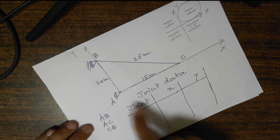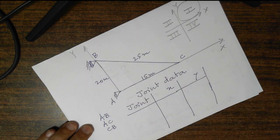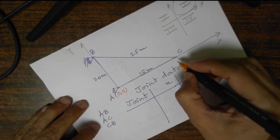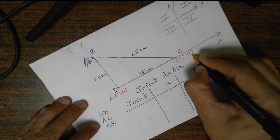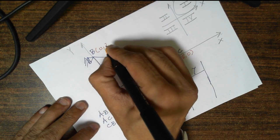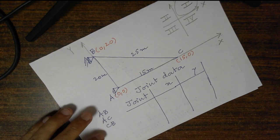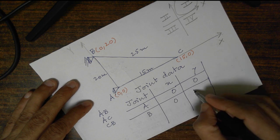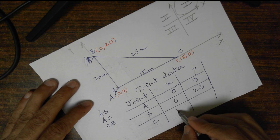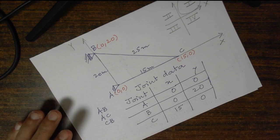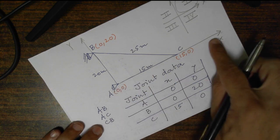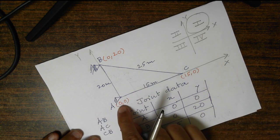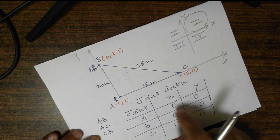I have selected joint A as the origin. So joint A has coordinates (0, 0). The x-axis runs along the base and the y-axis runs vertically. Joint C has x-coordinate 15, y-coordinate 0. Joint B has x-coordinate 0, y-coordinate 20. So joint data: A = (0, 0), B = (0, 20), C = (15, 0). This ensures all the truss lies in the first quadrant.